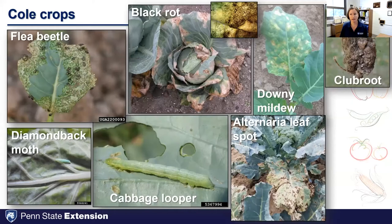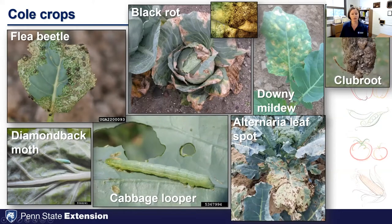For cole crop diseases and issues, flea beetle, diamondback moth, and cabbage looper are all really common. Black rot generated many reports this past year on plants being planted now for fall. Downy mildew, alternaria leaf spot, and club root are also seen occasionally. Getting a good sense of what common pest and disease issues we see every year, and what we can anticipate, is key.